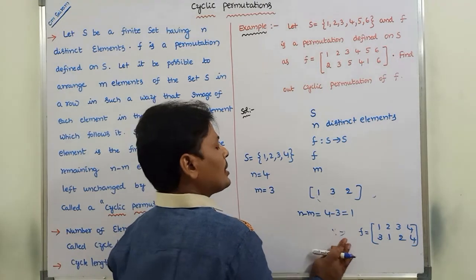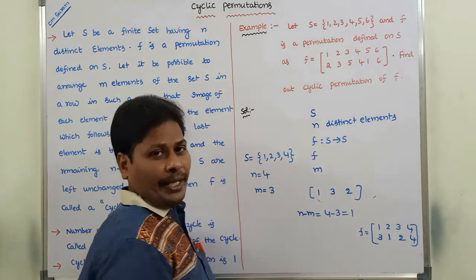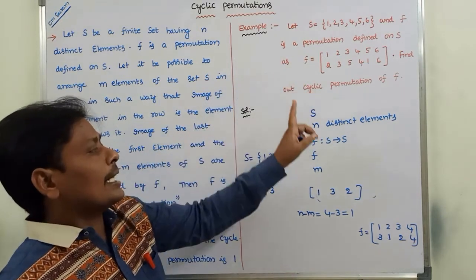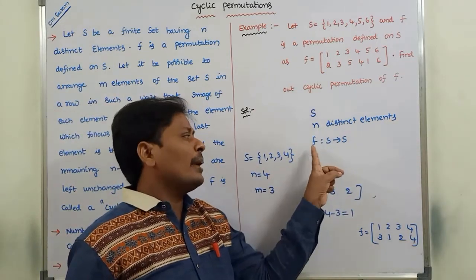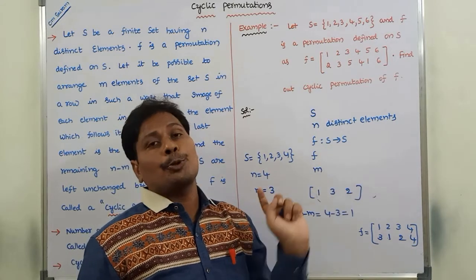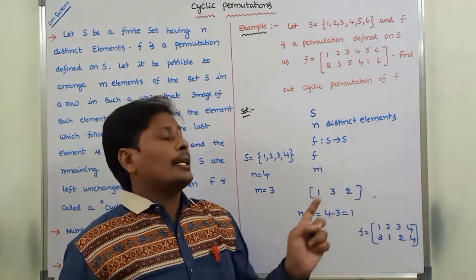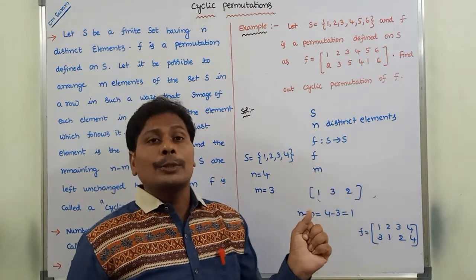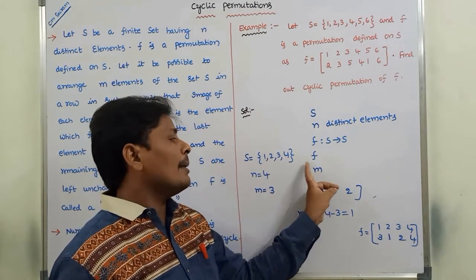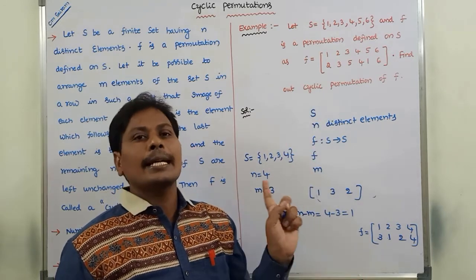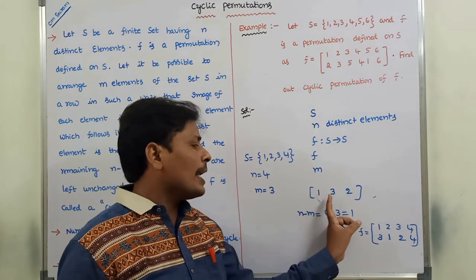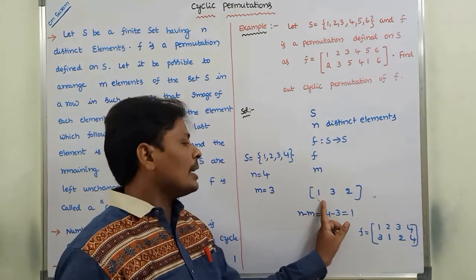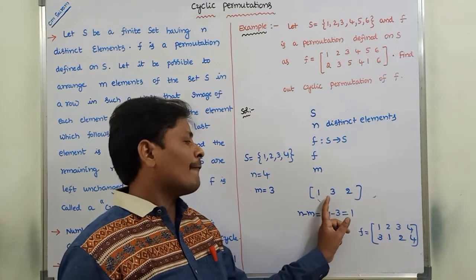So this is the definition of cyclic permutation. Let capital S be a finite set containing n distinct elements. S is a function mapping from S to S and is a permutation defined on the elements of set S. Let it be possible to arrange only m elements of set S in a row such that the image of each element in the row is the element which follows it.